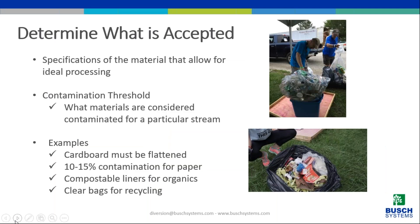No matter where you go, every location is different in terms of what's accepted in different streams and what is actually recyclable or compostable. It's important that the audit team has a good understanding of the acceptance criteria — the specifications of a material accepted by the hauler — for those specific areas being audited. This can include contamination thresholds. Examples of acceptance criteria include: corrugated cardboard must be flattened, contamination rates of 10–15%, compostable liners required for organics, or clear bag policies required for recycling streams.